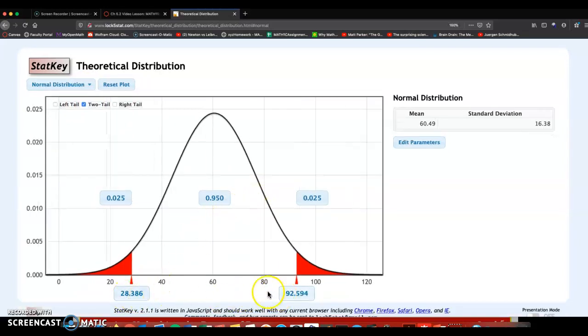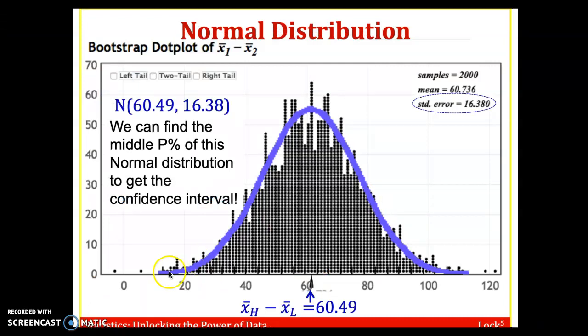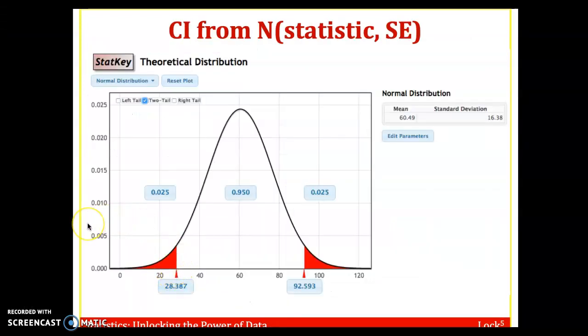And notice at the bottom here, we got 28.386 to 92.594. These are almost the same exact values we got in the previous slide, with a 95 percent confidence. Here I took a screenshot of that value. Notice that normal distribution mean is 60.49, standard deviation is 16.38. And that's another way, the normal distribution way, to create a 95 percent confidence interval.